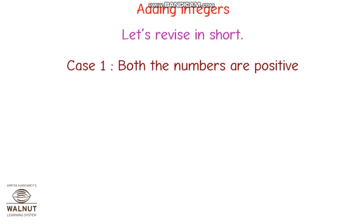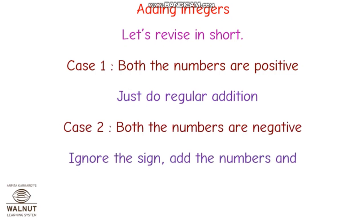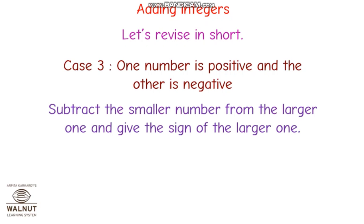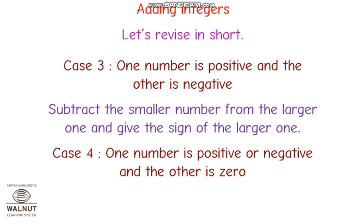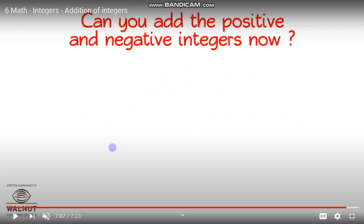Let's revise what we discussed in addition of integers. There are four cases: both numbers positive — do regular addition; both numbers negative — ignore the sign, add, and the answer is negative; one positive and one negative — subtract the smaller from the larger and give the sign of the larger; one number is zero — the answer is the number itself. I hope you understood this addition of integers. It's very easy to understand. In the next class we can discuss some other topic. Thank you.